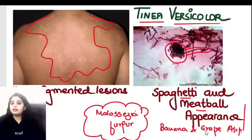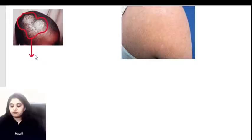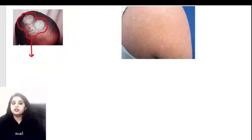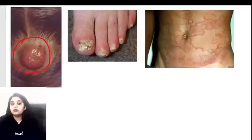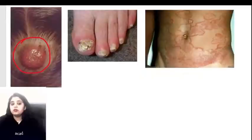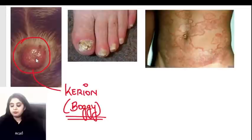Moving to more dermatology: a child or patient with crusted lesions on the scalp is called tinea capitis. Kerion is also on the scalp but it is a boggy swelling - a fluctuant boggy swelling on the scalp. The word 'boggy' is important in the exam. Kerion is different from simple tinea capitis.